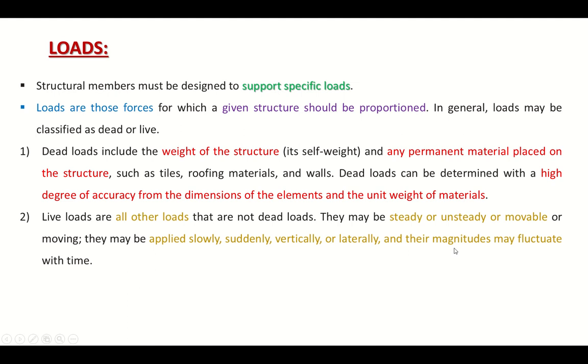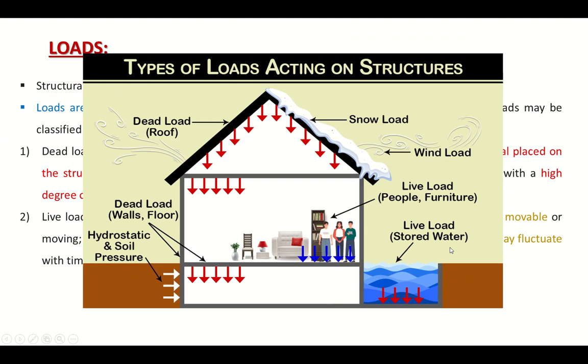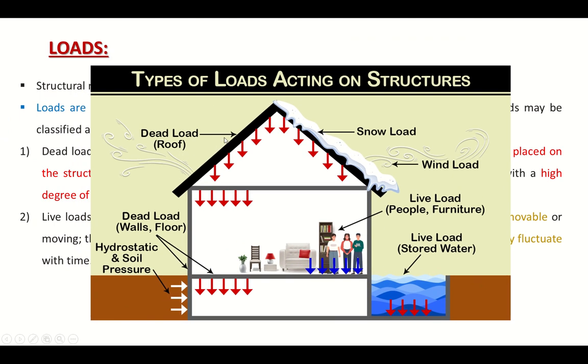Live loads may be applied slowly, suddenly, vertically, or laterally, and their magnitude may fluctuate with time. This is an example of types of loads acting on a structure. As you can see, there is the dead load of the roof and there is a dead load of snow on the roof.